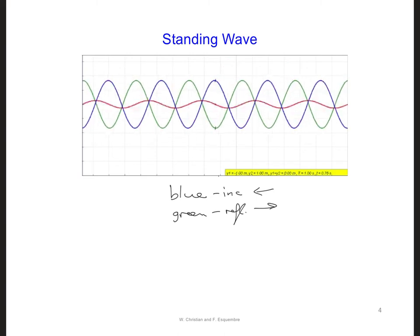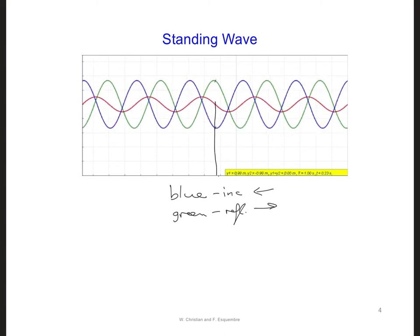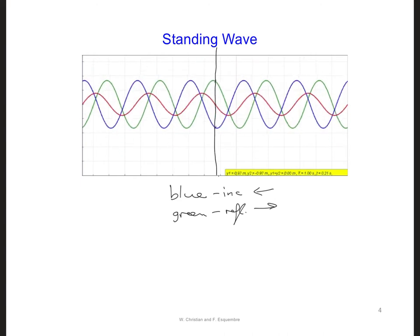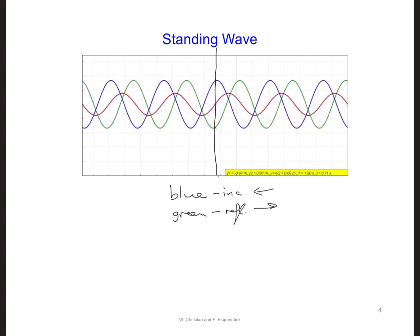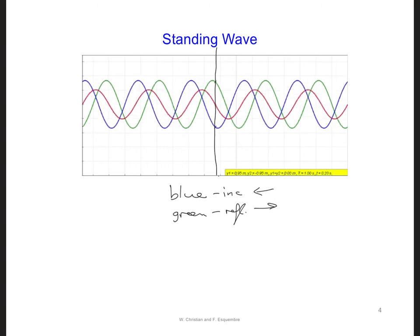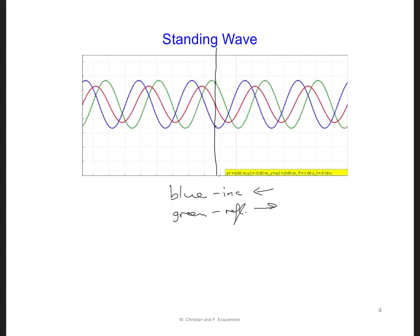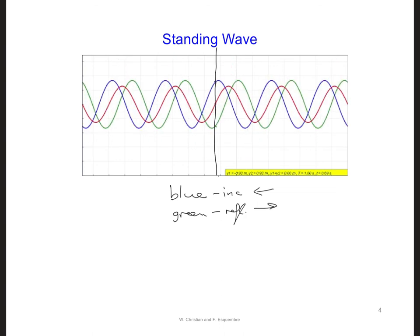You can see right in the middle here that the green and the blue waveforms are always equal and opposite to each other, which is what we expect right at the surface of the PEC. So the total tangential E-field is always zero over all time at the surface of the PEC.